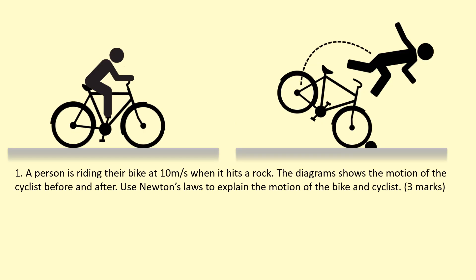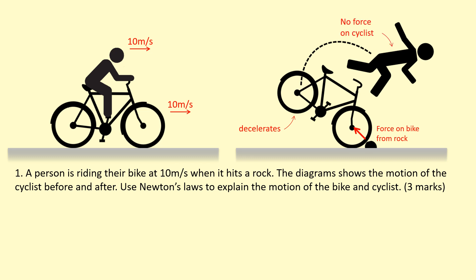In our first example, a person rides a bike at 10 meters per second and hits a rock. Both the bike and cyclist are moving at 10 meters per second to the right. The rock applies a force on the bike causing it to decelerate. However, there is no force on the person, so they just keep going at 10 meters per second. It feels like the person is thrown forwards, but really they're just maintaining their velocity.